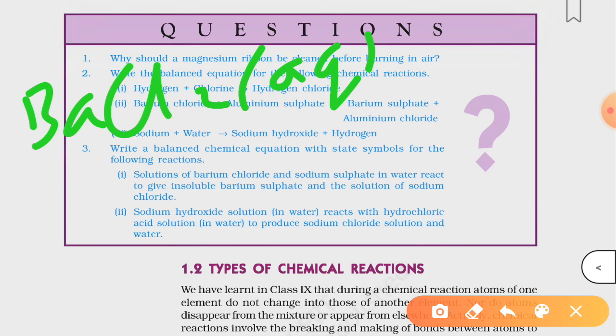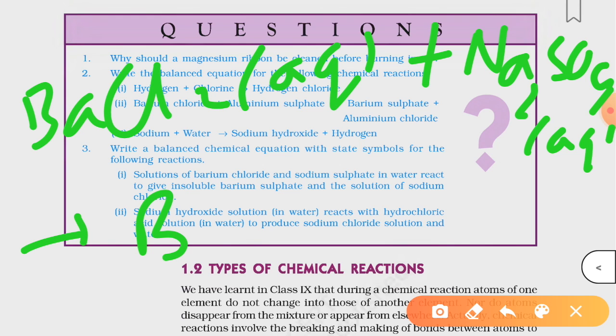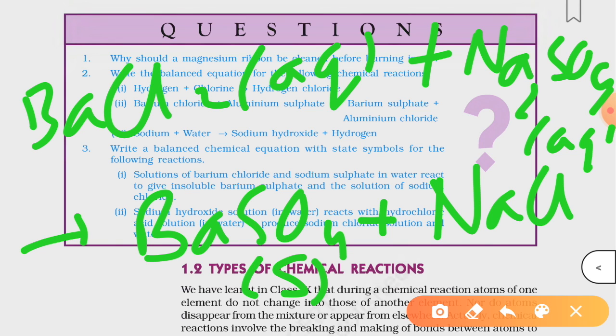Then the other is sodium sulphate solution, so you will write Na2SO4. This is your sodium sulphate and this is also aqueous because they both are dissolved in water. Now they are giving you barium sulphate, which is BaSO4, and sodium chloride, which is NaCl. Students, in this reaction your barium sulphate is insoluble, so you will write S for it because it is your precipitate, while your NaCl will be in aqueous form as it dissolves in water.